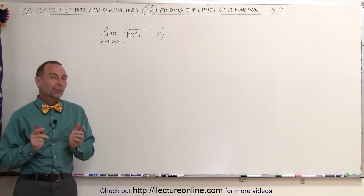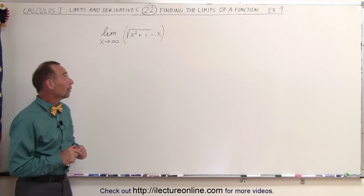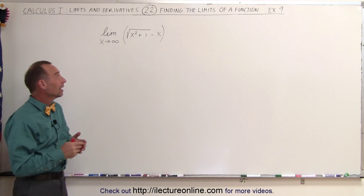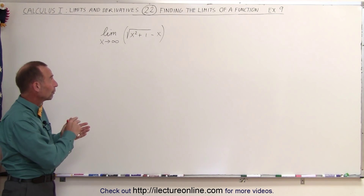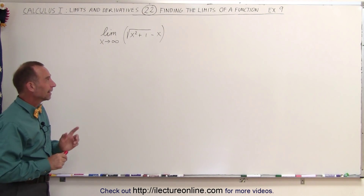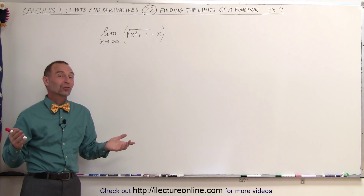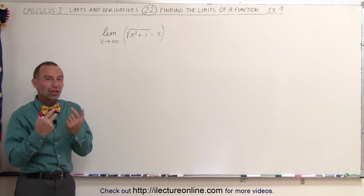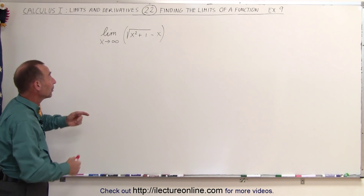Welcome to our lecture online. Here we have a very interesting problem. We're trying to find the limit as x approaches infinity of the expression: the square root of x squared plus 1, minus x. The trick here is — and usually in math it's always about the trick — what is the trick to make this work, or to change this into a format where you can take the limit?